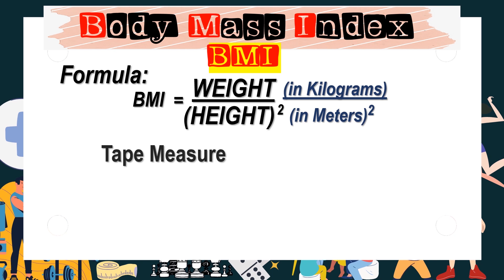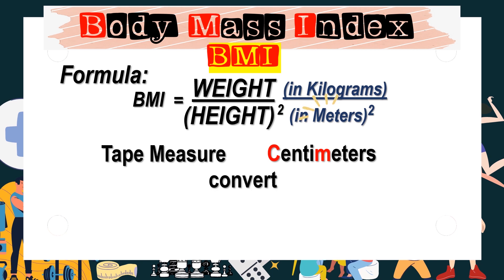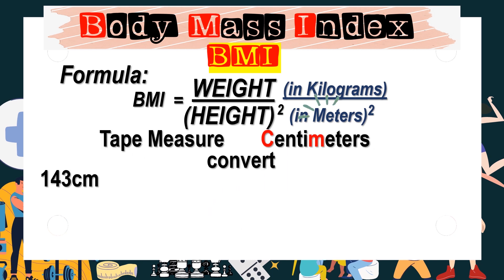The unit commonly used is centimeters. But in the formula, the height should be in meters. We have ways of converting centimeters to meters. For example, 143 centimeters — how will we convert this into meters?